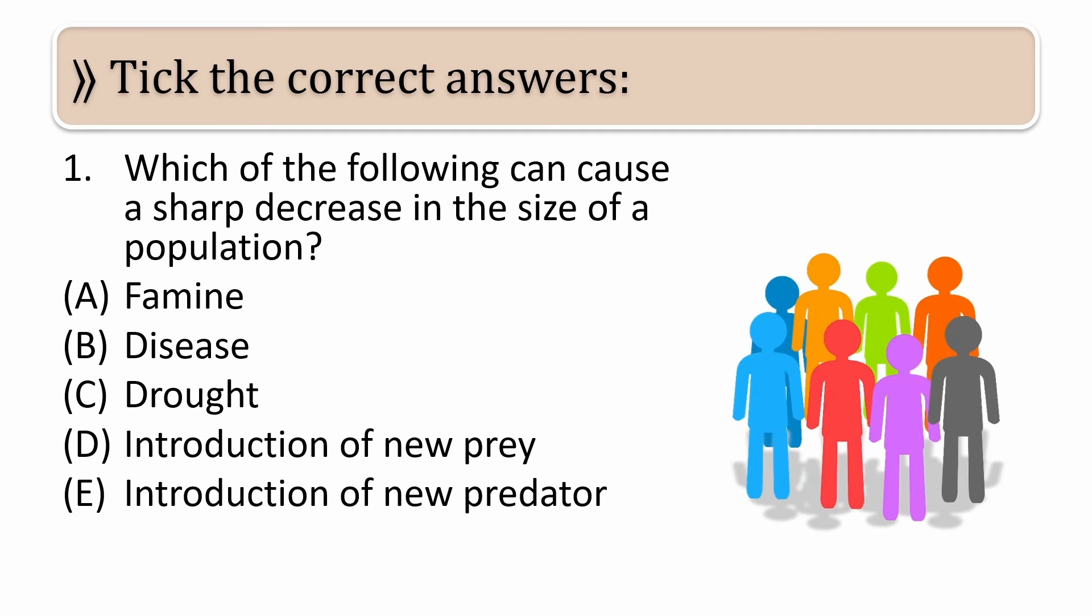So what are the reasons because of which population can decrease sharply? Famine means food shortage, disease means some illness, drought means a period of dryness where there is no rainfall. Then option D is introduction of new prey, introduction of new predator - if predatory animals come into the ecosystem, then population can decrease. So what do you think is the correct answer?